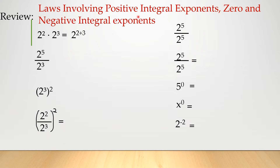If we're multiplying the same base, we simply add the exponents, and that is equal to 32 — 2 raised to the 5th power. If you are dividing, simply subtract the exponents, so 5 minus 3 is equal to 2, squared, that is equal to 4.